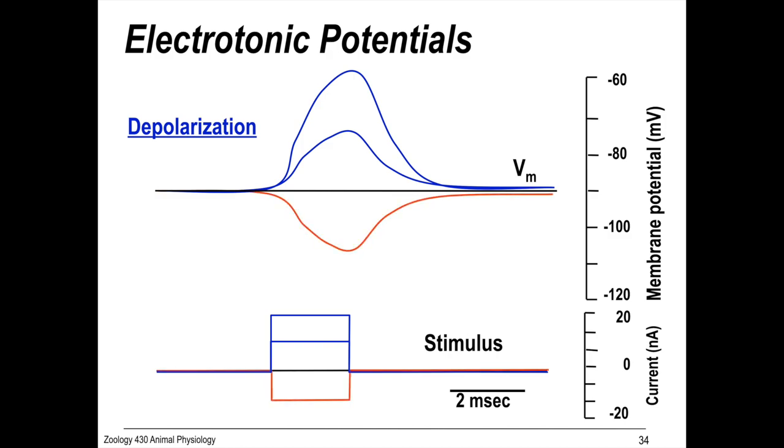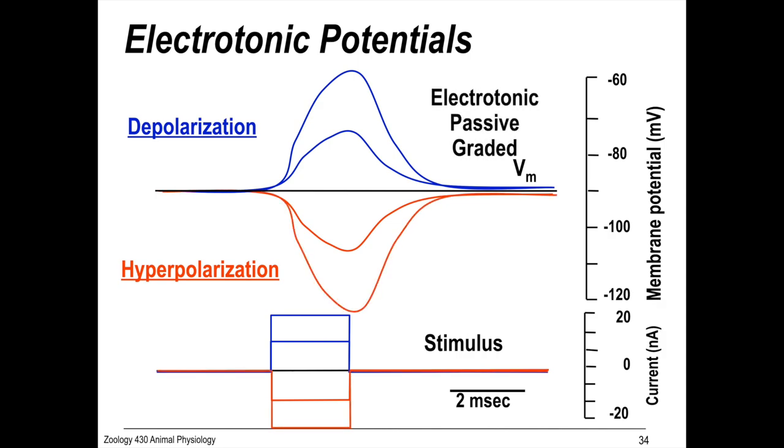If we apply a negative current, we'll get a hyperpolarization. All of these graded potentials are electrotonic and passive because they decay, and they're graded because they vary with magnitude of the stimulus.